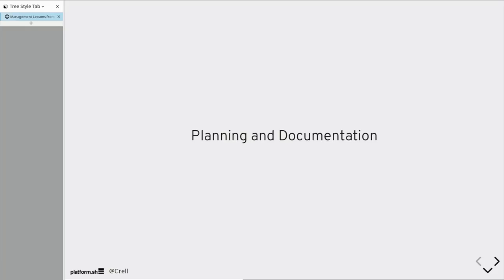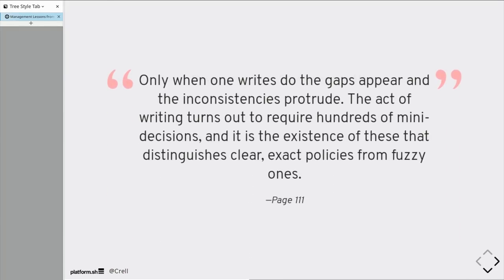How about planning and documentation? These are the same thing. These go hand in hand. Brooks argues that you need to write upfront documentation. Why? Because only when one writes do the gaps appear and inconsistencies protrude. The act of writing turns out to require hundreds of mini decisions and it is the existence of those that distinguishes clear, exact policies from fuzzy ones.